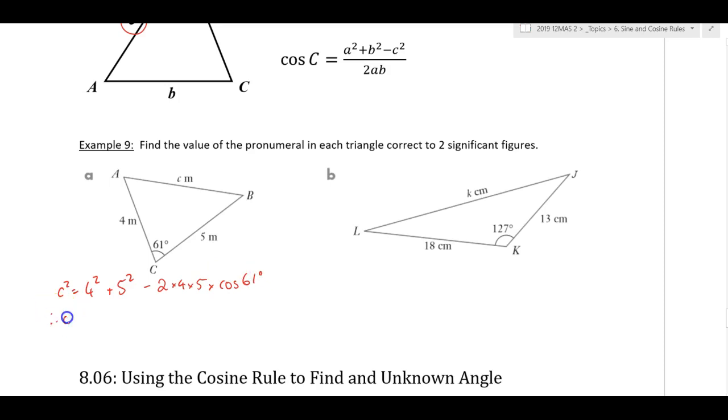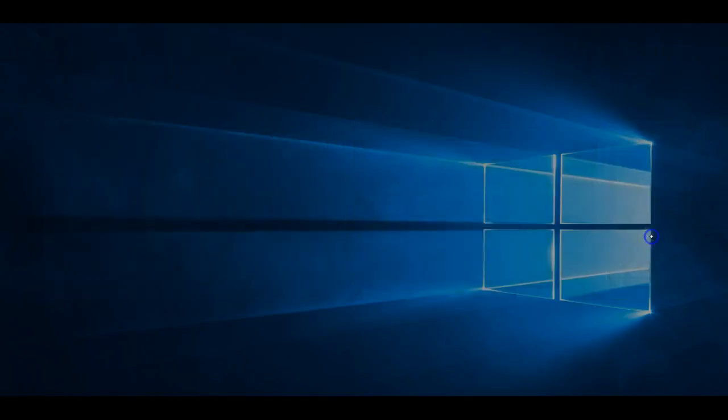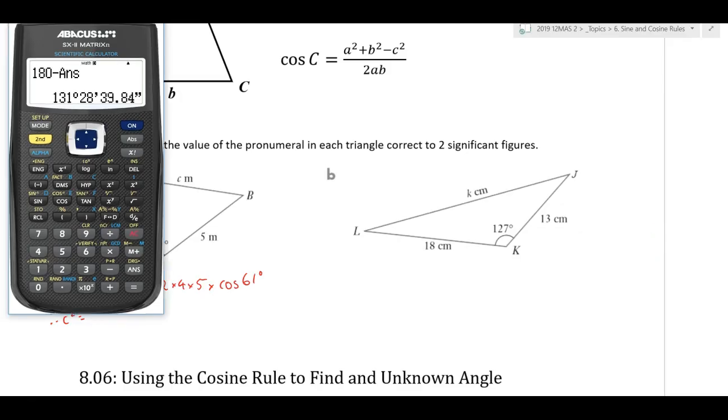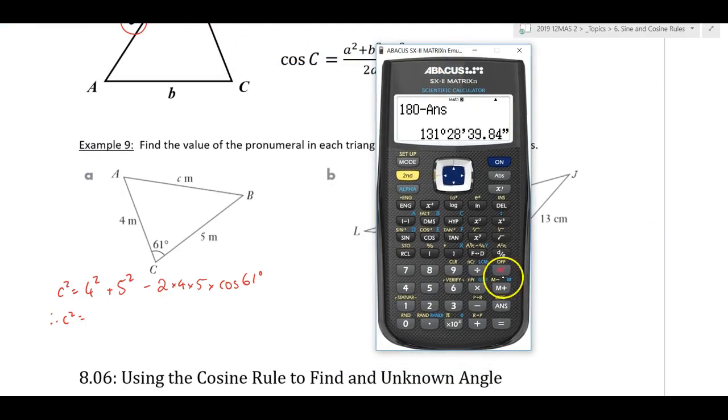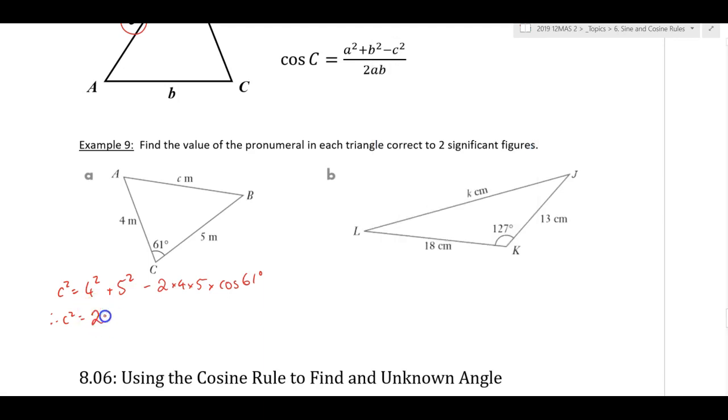Minus 2 times 4 times 5 times the cos of 61 degrees. Therefore, c squared equals... Out comes the calculator. We'll clear that away. 4 squared plus 5 squared minus 2 times 4 times 5 times the cos of 61 equals 21 point something. 21.608, thereabouts.